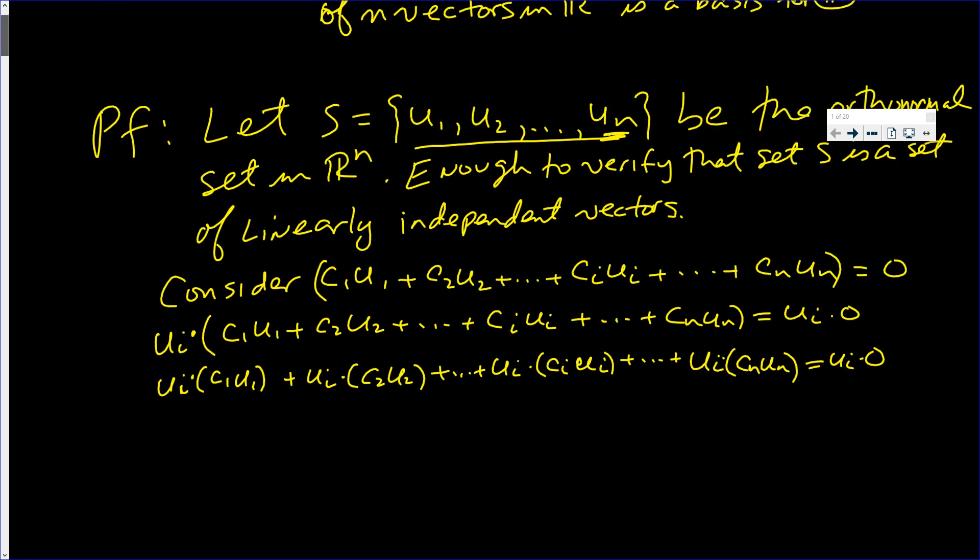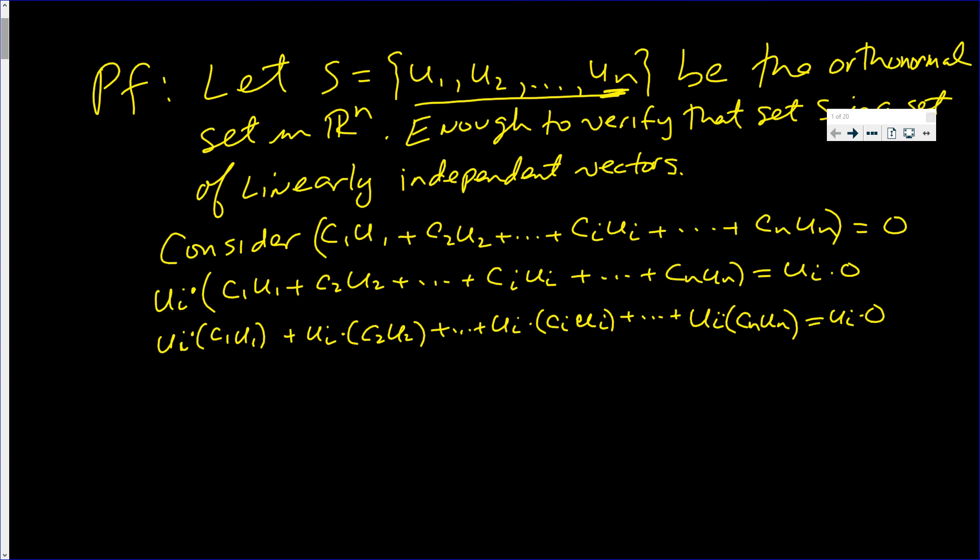Now, hopefully you see where this is going. I can bring the scalar in front. This is c1 times ui dot u1 plus c2 times ui dot u sub 2, all the way up to c sub i times ui dot ui, all the way down to c sub n, ui dot un. And ui dot the zero vector is zero.